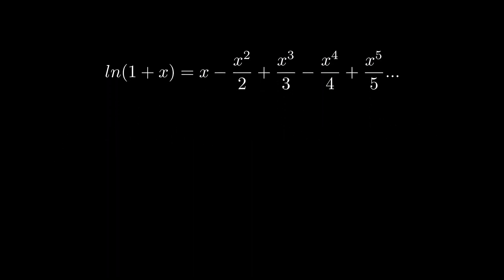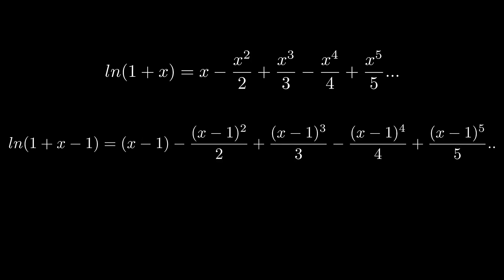In this expression, we can simply put x equals to 1 to get the alternating harmonic series. What happens if I replace x with x minus 1? We get the expansion for natural log of x.